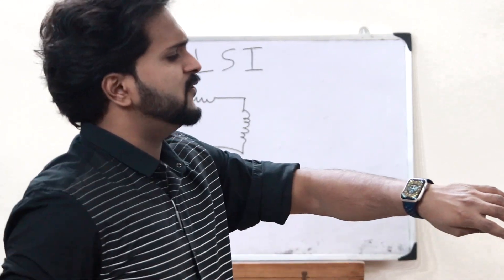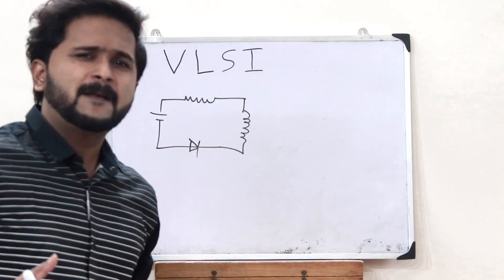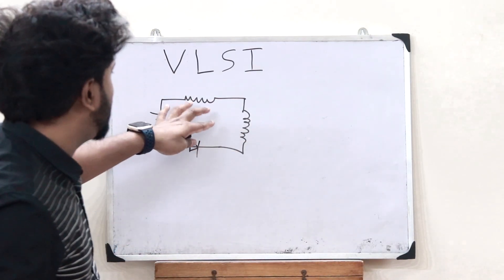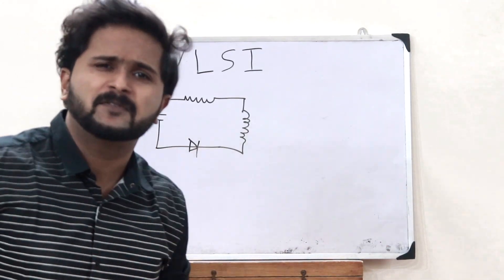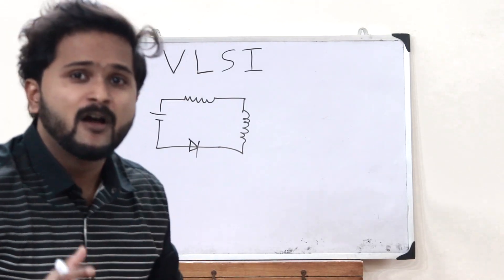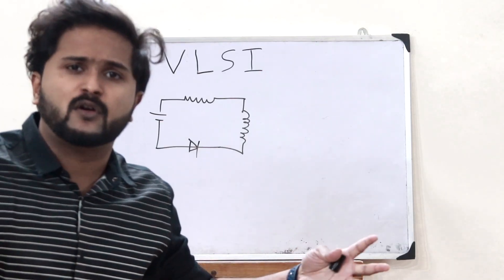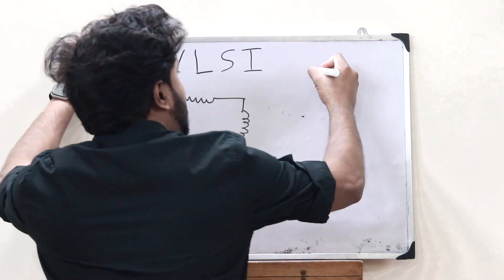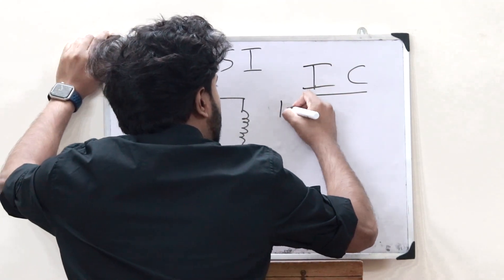In an electronic device like this, there will be a lot of electronic circuits for it to work. But logically thinking, imagine incorporating thousands of such circuits into this tiny little device — that is practically impossible. So, just so that we can incorporate thousands of electronic circuits into a very small area, that is when an IC or an integrated circuit comes into play.